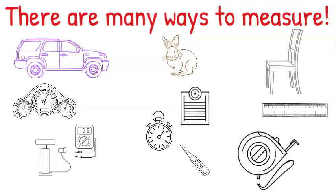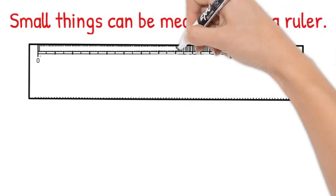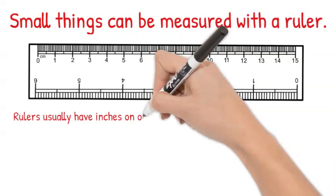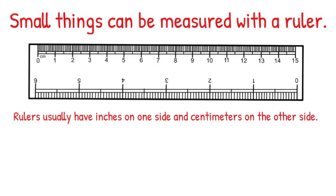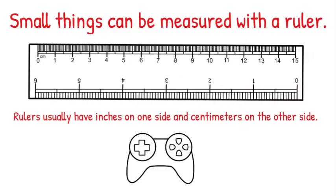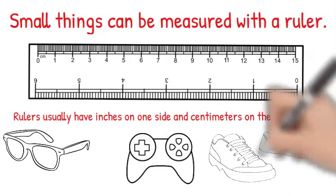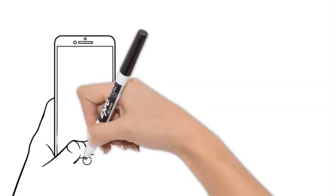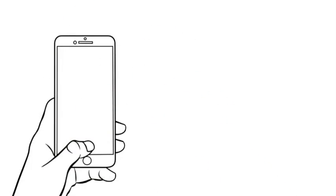Small things can be measured with a ruler. Rulers usually have inches on one side and centimeters on the other. Can you think of some things a ruler could measure? Let's measure a cell phone first.